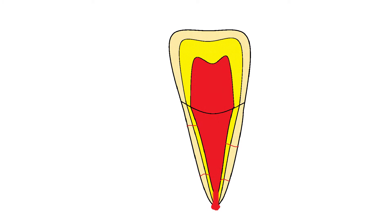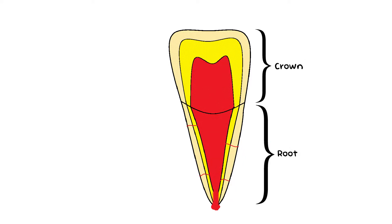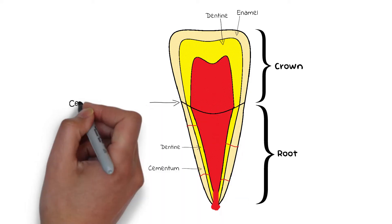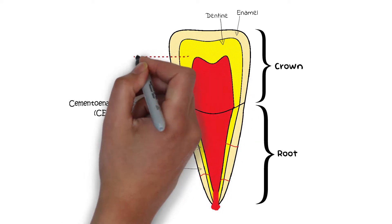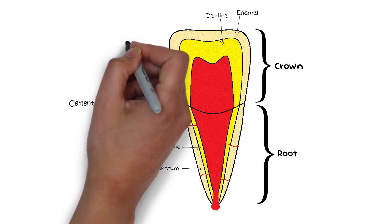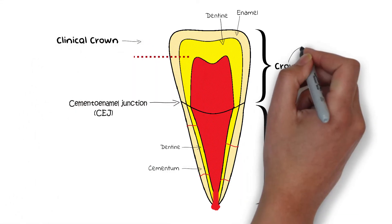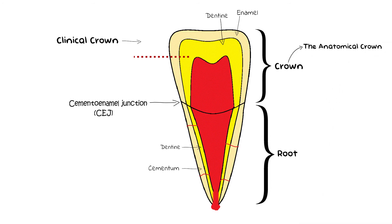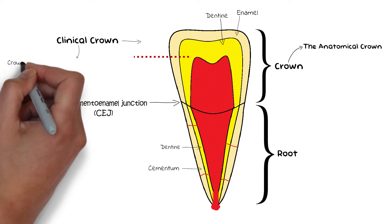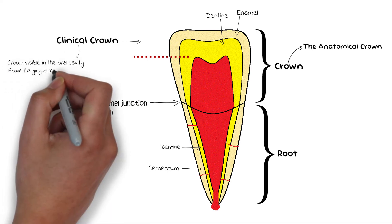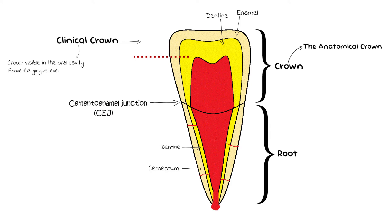The tooth is divided into two parts: the crown and the root. The crown is the portion covered with two hard tissues — the enamel and the dentine. While the hard tissues of the root are the cementum and the dentine. The part where the enamel meets the cementum, or where the crown meets the root, is known as the cementoenamel junction. The crown of the tooth is also divided into two separate parts: the clinical crown and the anatomical crown. The clinical crown is the portion visible in the oral cavity — above the gingival level. The entire crown covered by enamel is known as the anatomical crown.